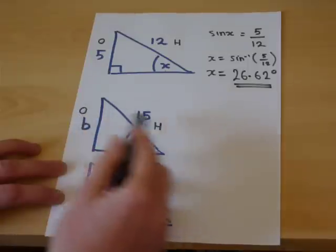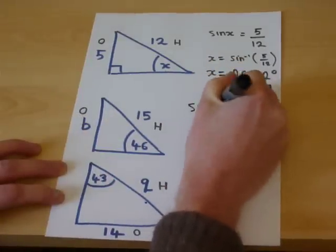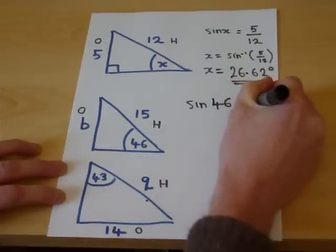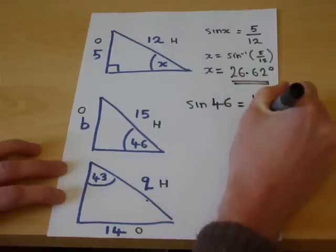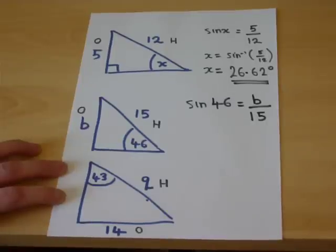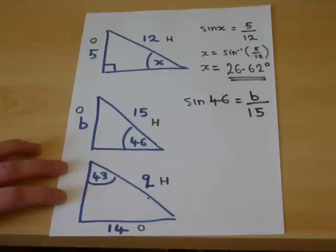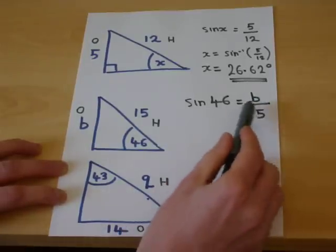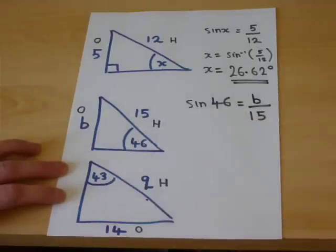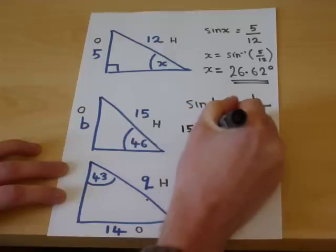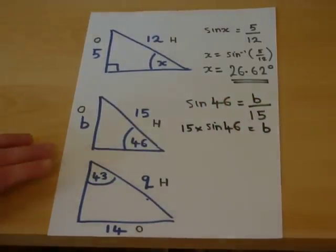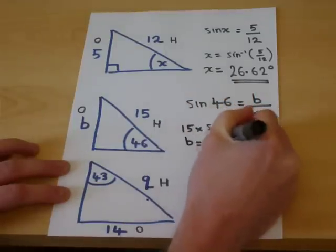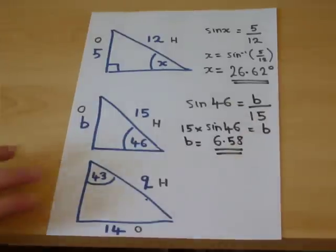Second one, sine of the angle is opposite over hypotenuse. So sine 46 is the opposite B over the hypotenuse 15. To find the missing letter this time is a bit of algebra. In the first example we wanted the angle which was within the sine, but now we want the side which is not with the sine. We times through by 15, so 15 times sine 46 will give us B. This equals 6.58, and that is the side B.